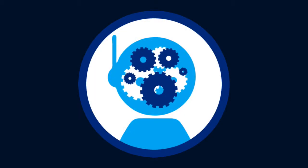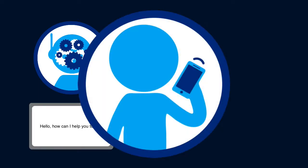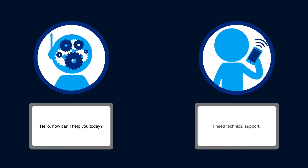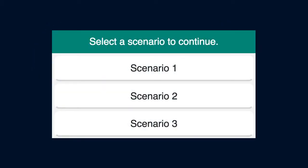At the start of each call, the system greets the caller and asks the reason behind their call. The caller then responds with their opening intent. At this point, options appear on the screen. Your choice of one of the listed options launches alternate scenarios of the same call. To get the most out of this module, go through each scenario and observe the effect of proper and improper handling on the caller.